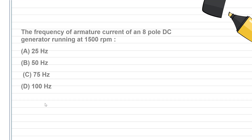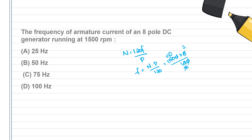The frequency of formats — a current of an 8-volt motor this year running at 1500 RPM. N into P divided by 120: 1500 × P divided by 120 × 50. Divided by 120, giving 12,200 divided by 120.